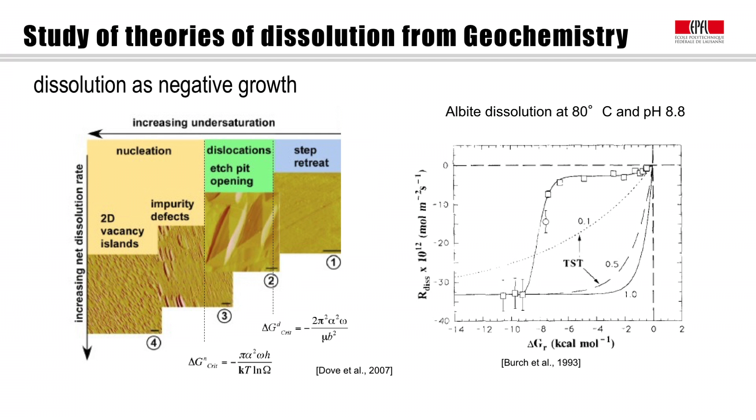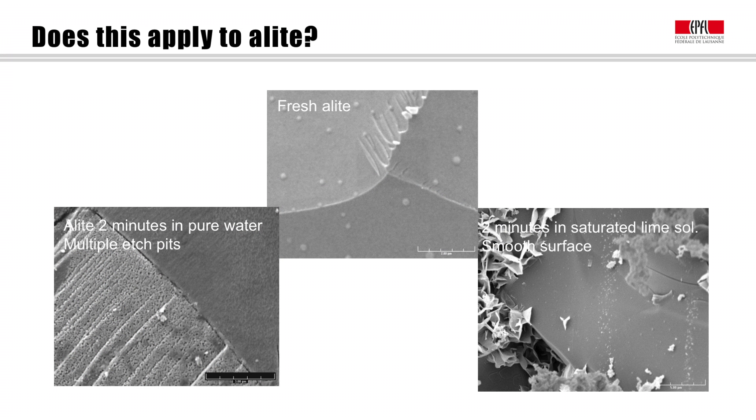Now, the question is, this has been well proven for many minerals, but does it apply for cement minerals? Well, my first question is, well, why not? If it applies for all other minerals, why should the minerals before having cement clinker be any different? And in fact, we see that they're not any different.